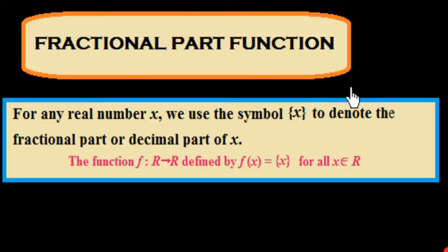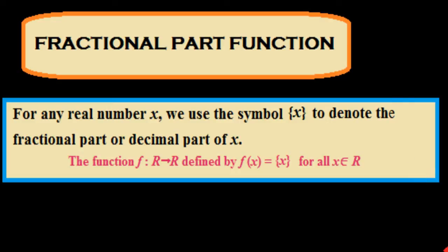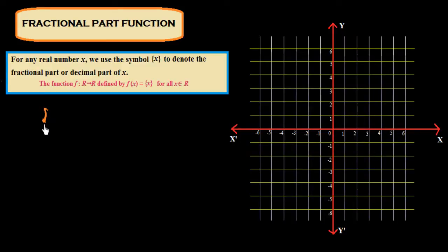Now we study the fractional part function. For any real number x, we use the symbol for fractional part of x to denote the decimal part of x. The function f: R to R is defined by f(x) = fractional part of x, for all x belonging to R. For example, the fractional part of 3.75 is 0.75 — we take only the decimal part.